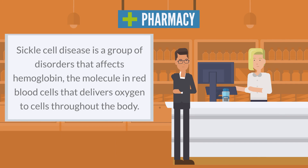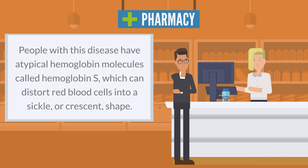Sickle cell disease is a group of disorders that affects hemoglobin, the molecule in red blood cells that delivers oxygen to cells throughout the body. People with this disease have atypical hemoglobin molecules called hemoglobin S, which can distort red blood cells into a sickle, or crescent, shape.